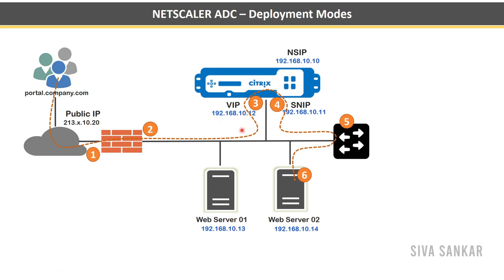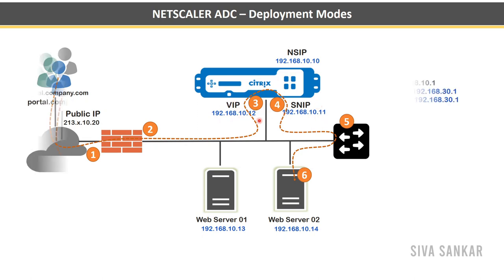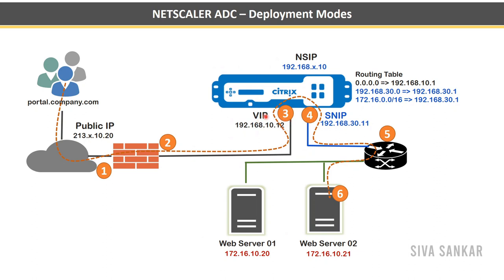In one-arm mode, NetScaler has only one interface — your NSIP can be in any VLAN. For data traffic, you have one interface with one VLAN where the VIP and SNIP reside. In two-arm mode, the VIP is on one interface and the subnet IP is on a different interface, meaning traffic goes in from one interface and returns via another to the back-end servers.